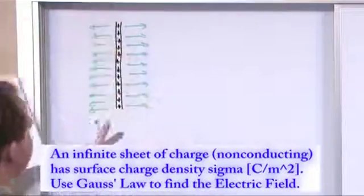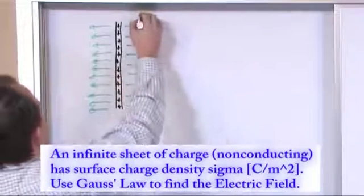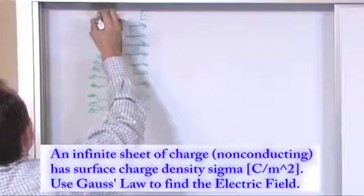So if this is a giant sheet, infinitely long, then this electric field is pointing out of one side and pointing out of the other side. That's the only thing that makes physical sense.